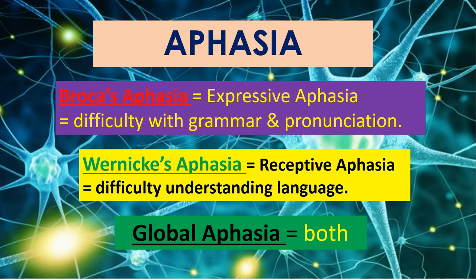When people have damage in the language areas of the brain, this is called aphasia, and there are several different kinds. Broca's aphasia — damage in Broca's area — is also called expressive aphasia, meaning a person will have difficulty using grammar and pronunciation. Wernicke's aphasia — damage in Wernicke's area — is also called receptive aphasia, meaning difficulty understanding language. Sometimes a massive stroke damages the whole left hemisphere, causing global aphasia, because both Broca's and Wernicke's areas have been affected.